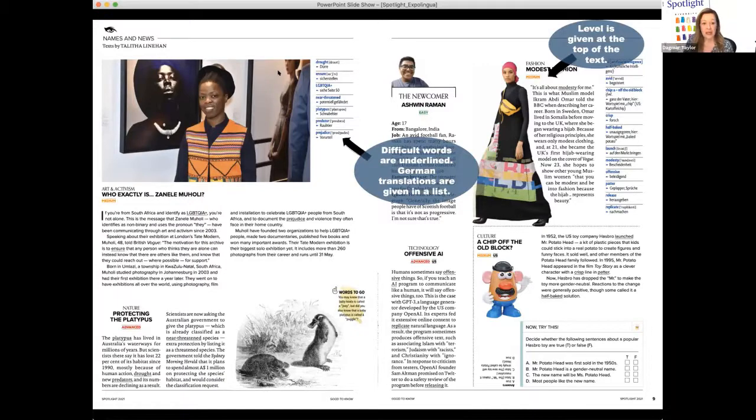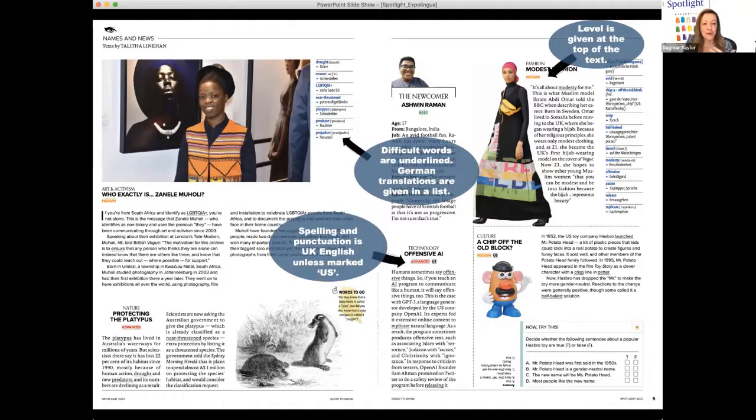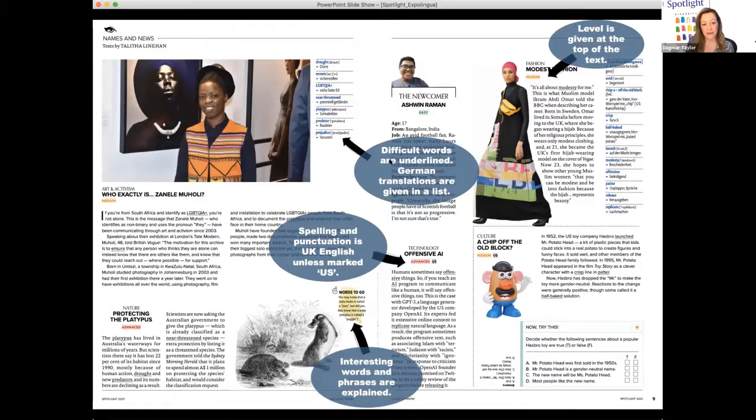And the difficult words are underlined and translated in German. So if you're not a German speaker, that's not going to be much help. But it's good, at least you've got the English words at the side there as a guide. So in the whole magazine, the spelling and the punctuation is in UK English, unless it's marked US. So and then it's usually North American English. So sometimes we've taken texts from North America, and then we use that, the punctuation and spelling from there. And then you've also got some highlighted areas with interesting words and phrases that are explained, which is quite nice little tips there.